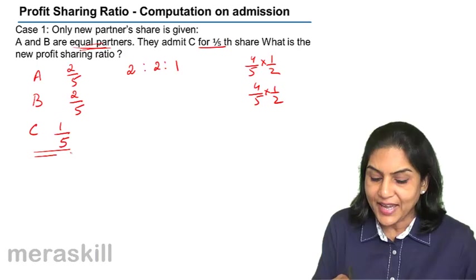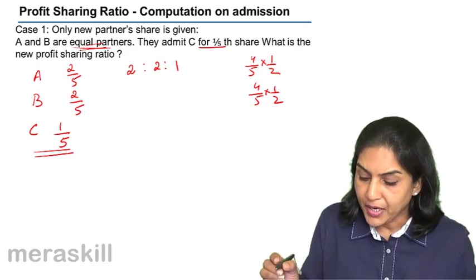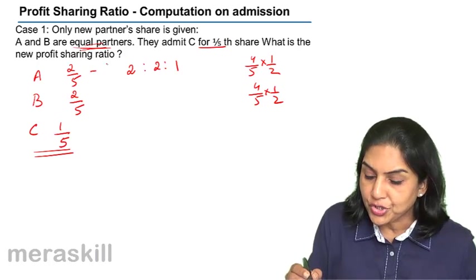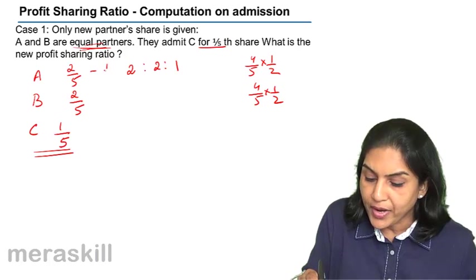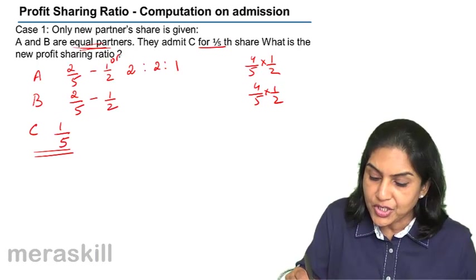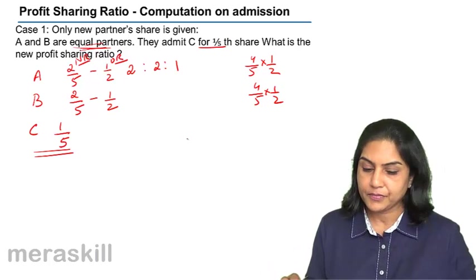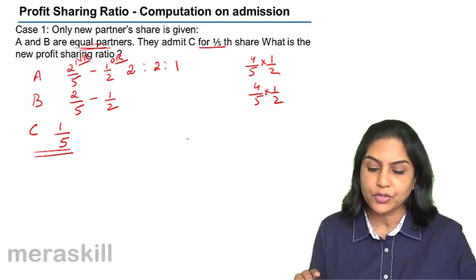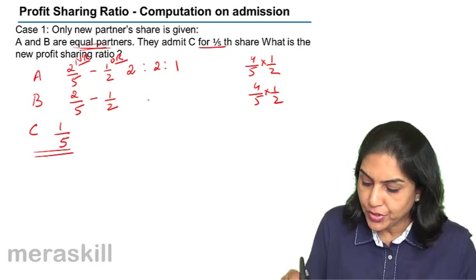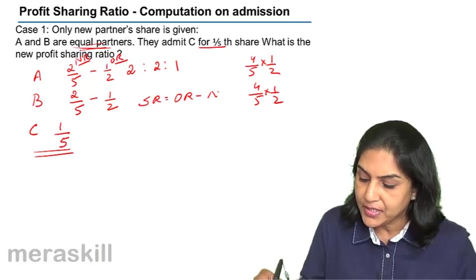C's gain is 1 by 5. Now let us find the sacrifice made. In A's case, the new ratio is 2 by 5 and the old ratio was 1 by 2. The sacrificing ratio is equal to old ratio minus new ratio.